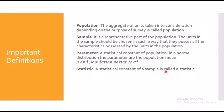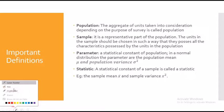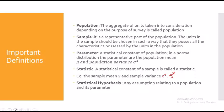Similarly, there is a statistical constant for a sample, and that is called a statistic. Don't confuse between 'statistic' and 'statistics' — they are different. A statistic is a statistical constant of a sample. Examples include the sample mean (x̄) and the sample variance (s²). So statistic refers to these sample-level measures.